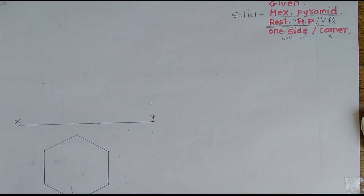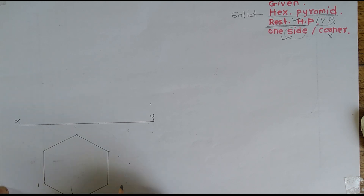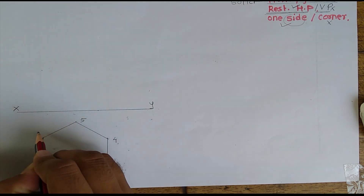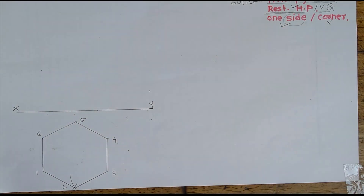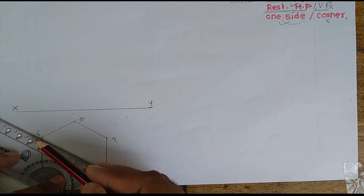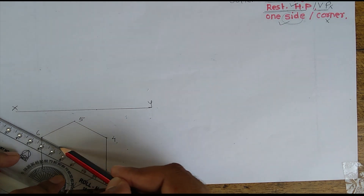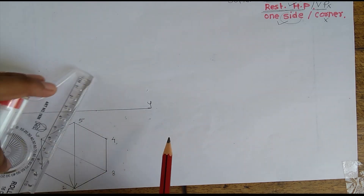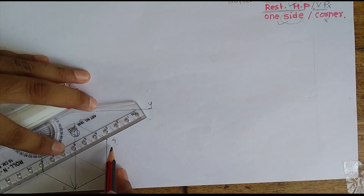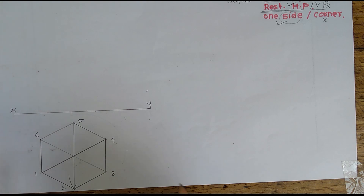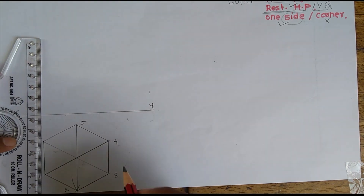Now I will give naming to this hexagon. Starting from here: this will be number one, this will be two, three, four, five, six. The hexagon has six corners. To find out the center of this hexagon I will join each corner. After joining, I can find out the axis, and I will take the projection of each side into the front view.